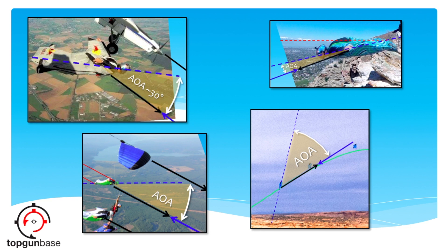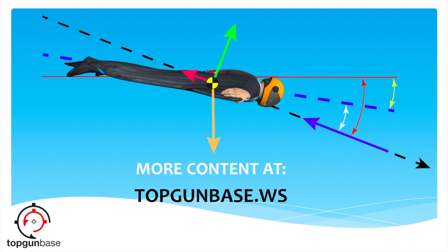That wraps it up for episode two of Wingsuit Angle of Attack, with four real-world observations to help you wrap your head around the concept of angle of attack. Once you get the hang of it and know what to look for, hopefully you'll find yourself analyzing video and media content with a more refined eye and raise collective awareness for AOA. Keep in mind that we're in the golden age of wingsuiting right now — suit technology is improving at the fastest pace we've ever seen and it's only getting better. So please make sure your brain is advancing faster than the suits coming out. Keep learning, always be training, stay tuned for more at Top Gun Base, and always remember to fly smarter, not harder.